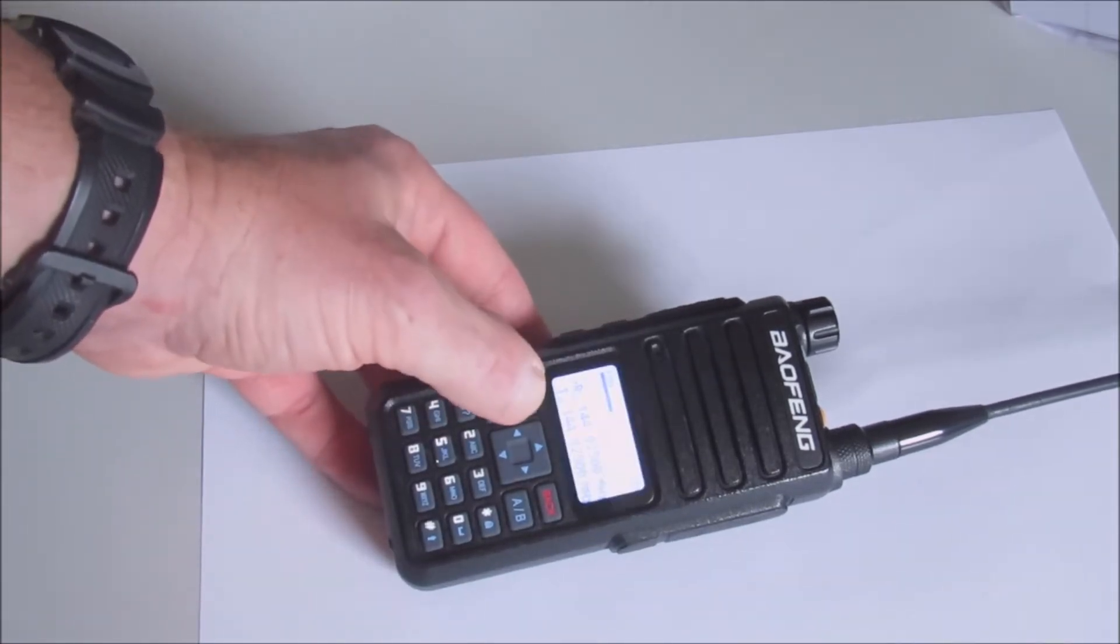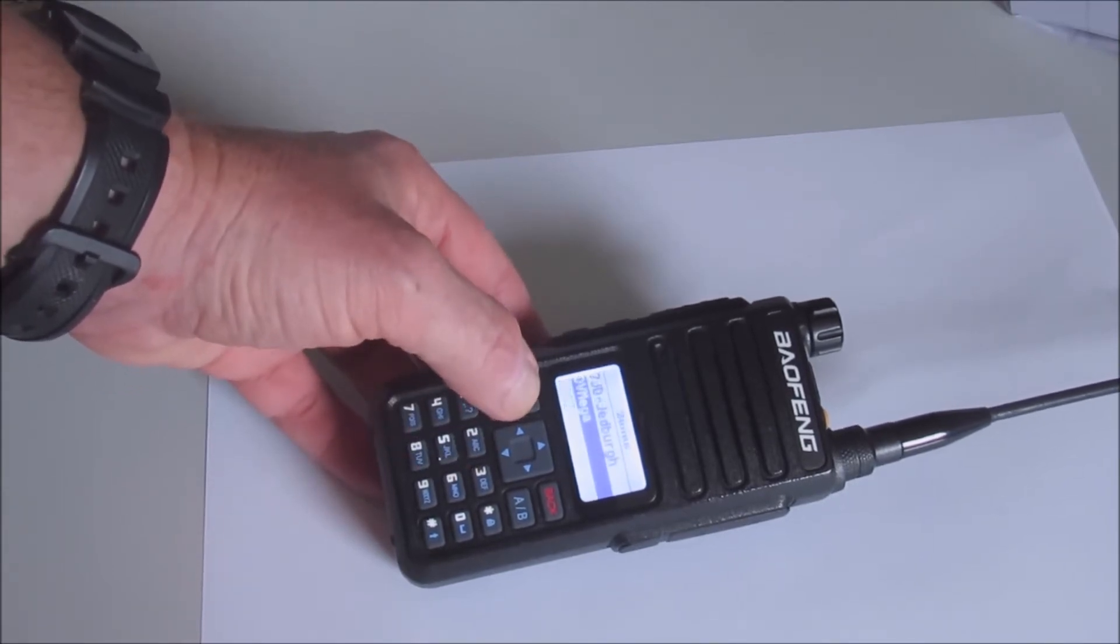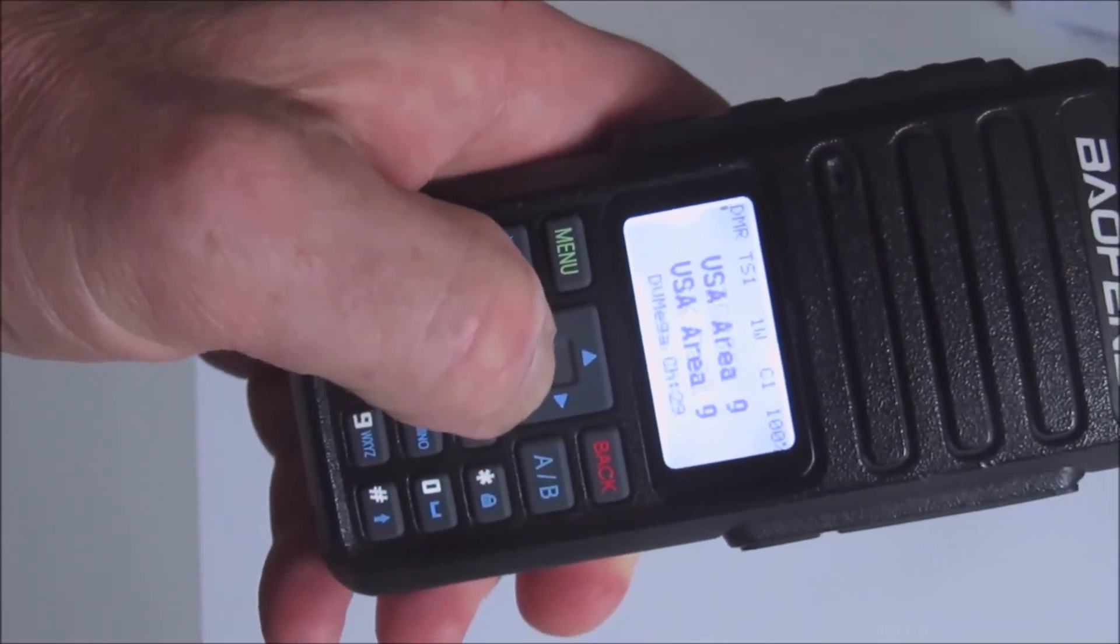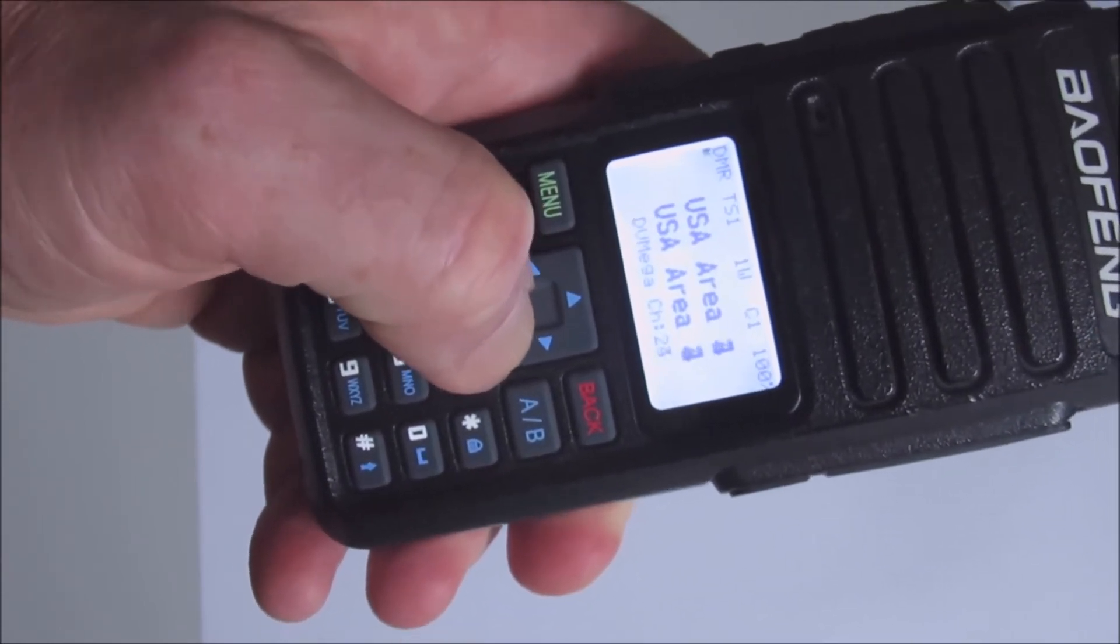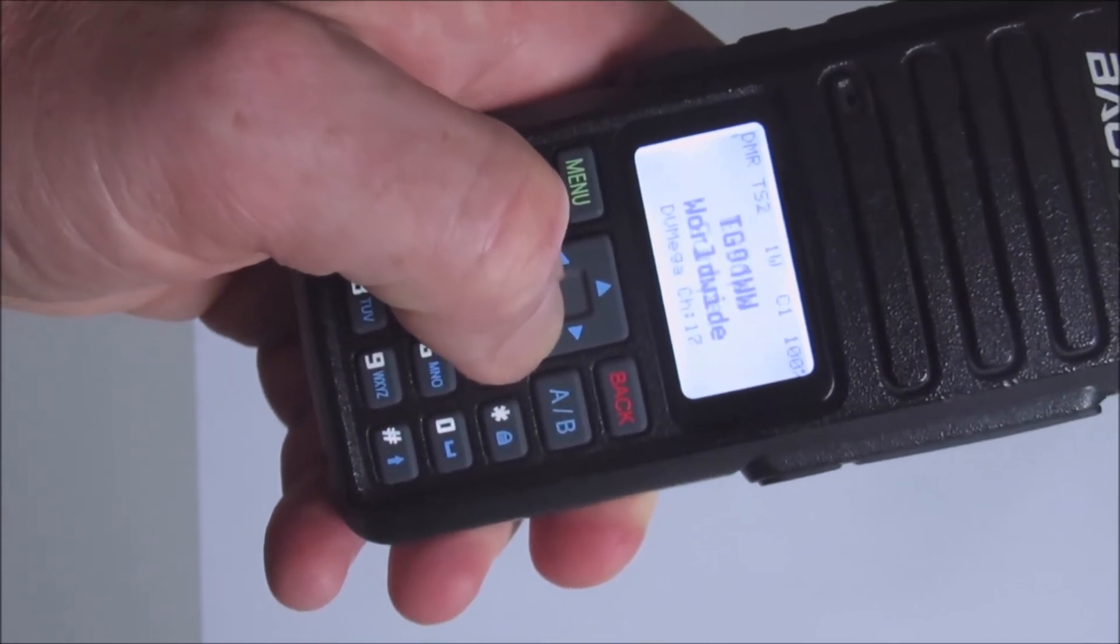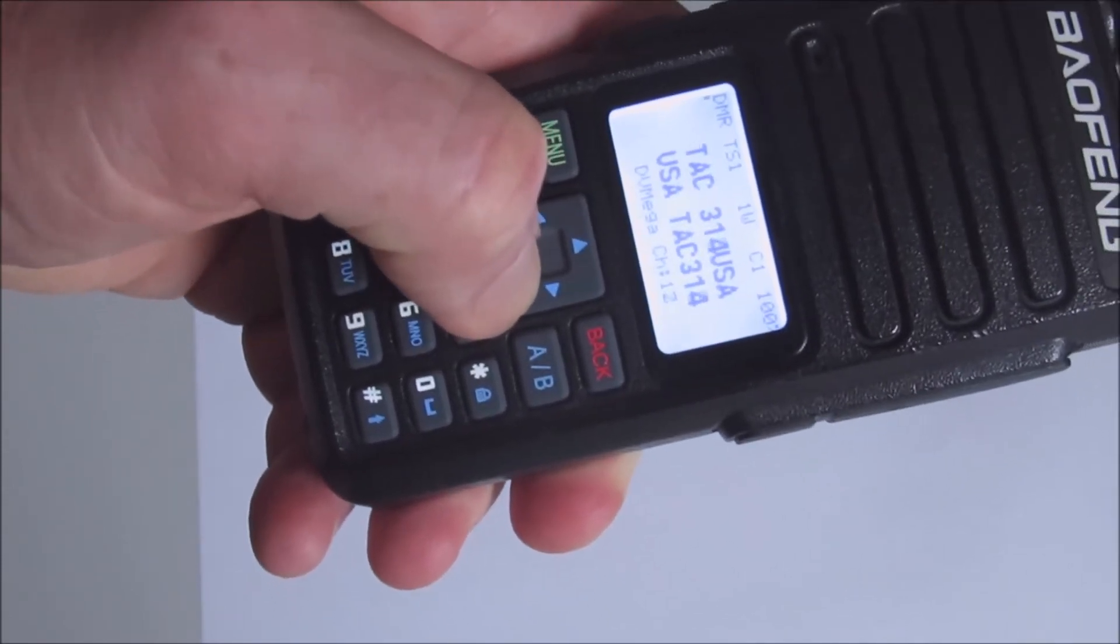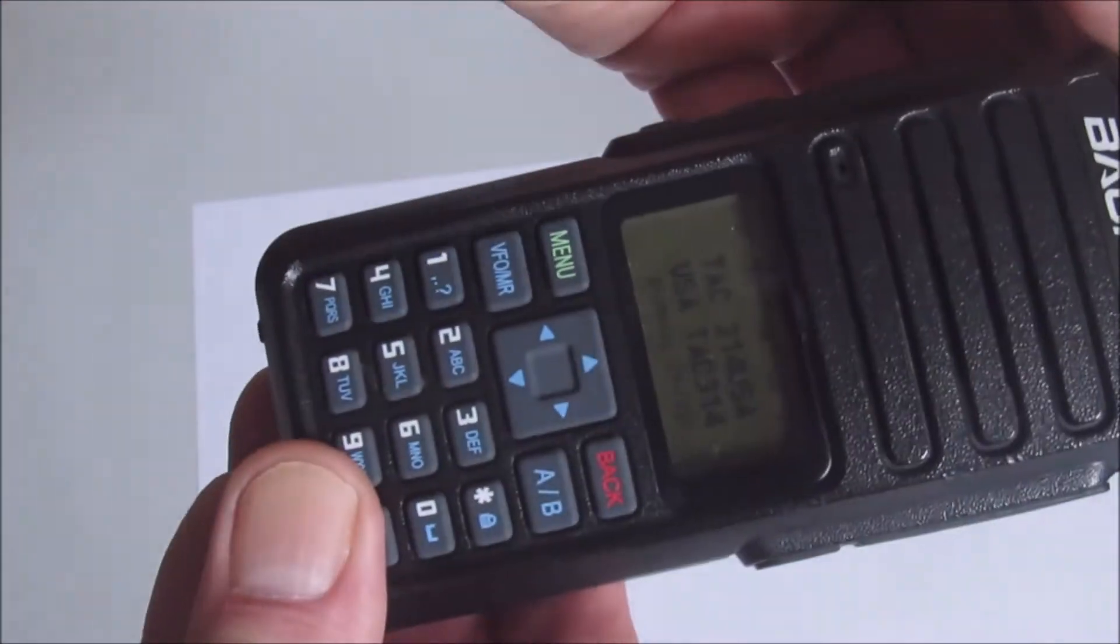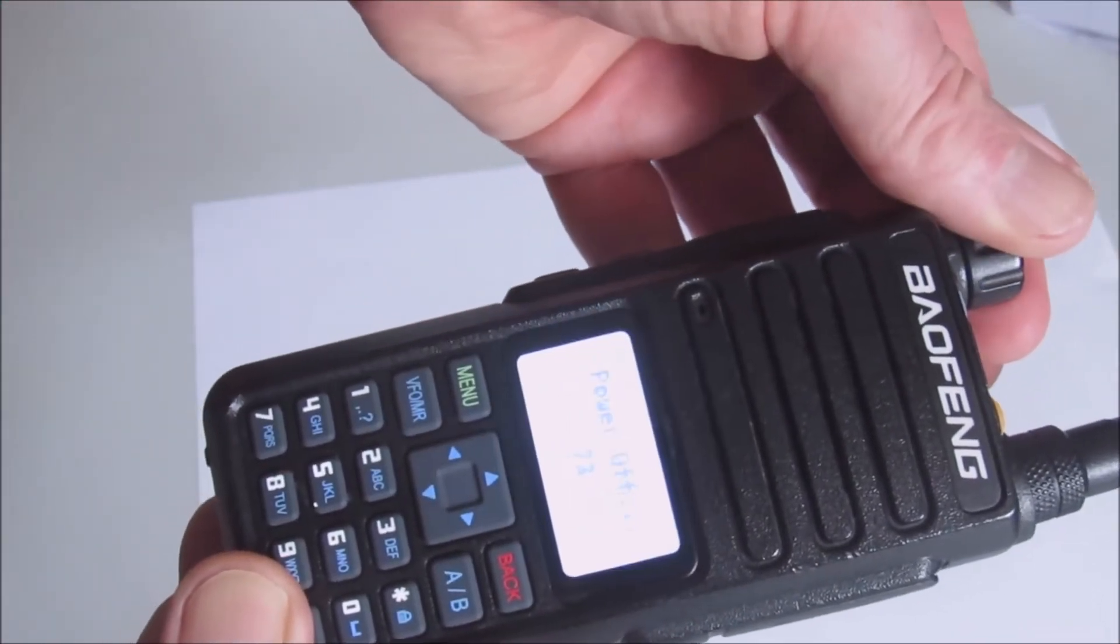If I just flick to the menu, we can see these are some of the talk groups I've got programmed into this particular transceiver. We'll just take a look at the display and how the display appears. This firmware makes the transceiver much more versatile. Let's have a look at a standard one without the upgraded firmware so you'll actually see the difference in the display.